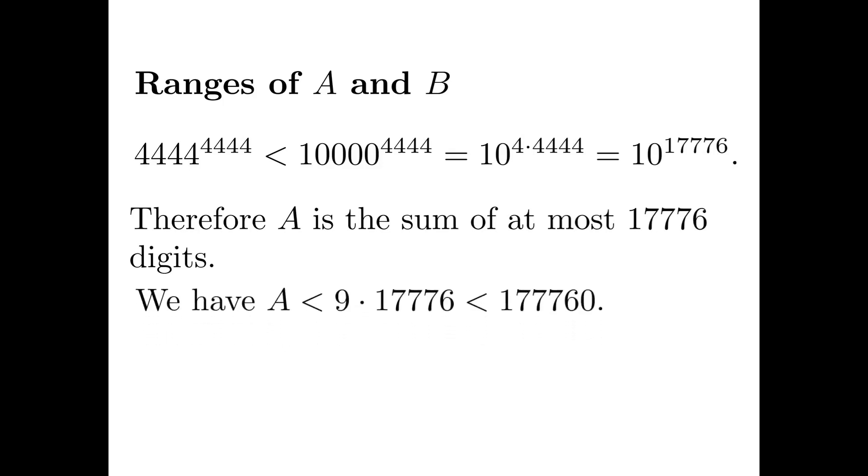The worst scenario is that all the digits are 9, which means A is less than 9 times 17,776, which is less than 180,000.